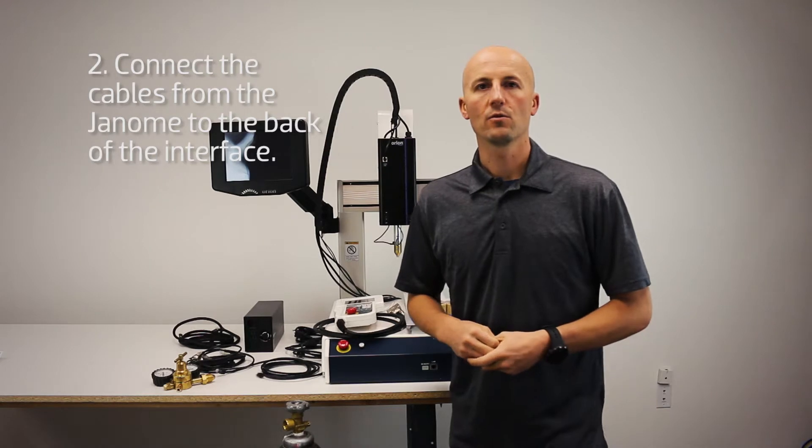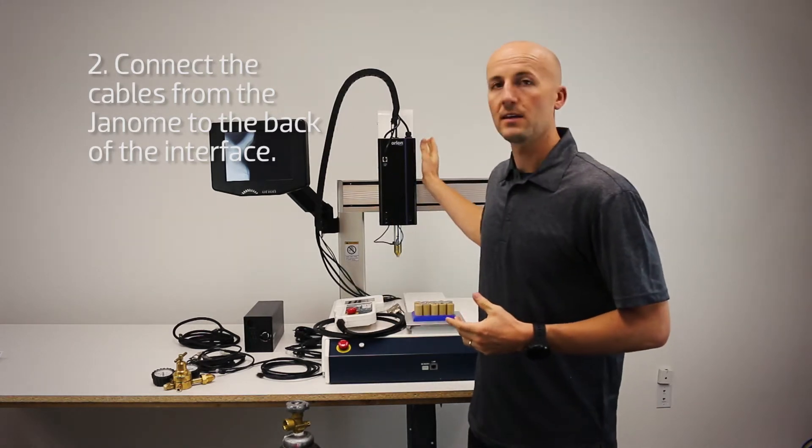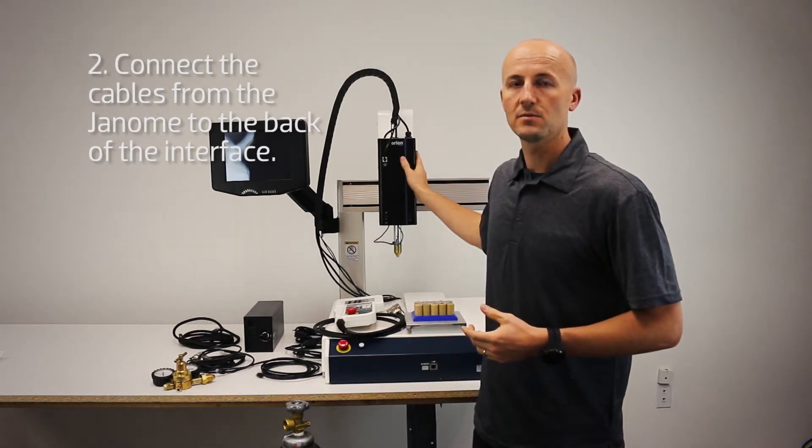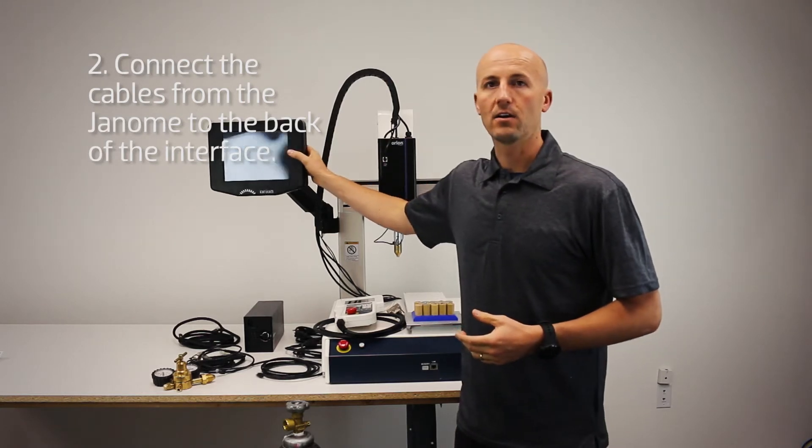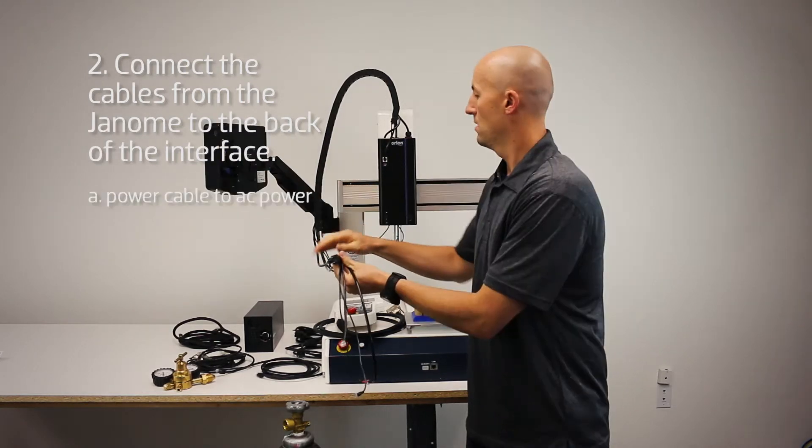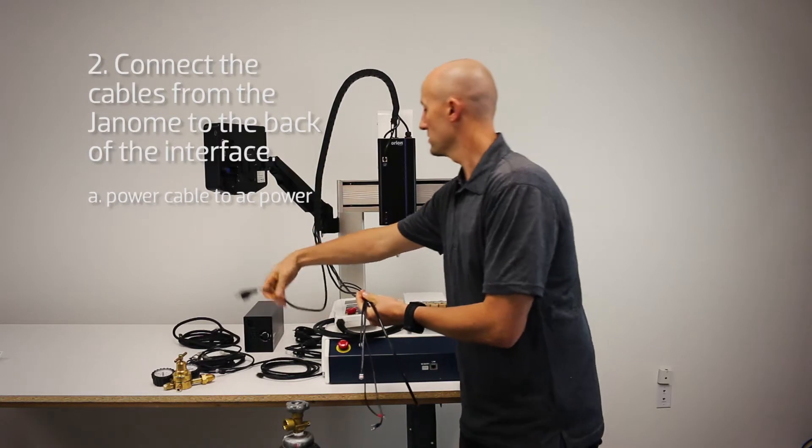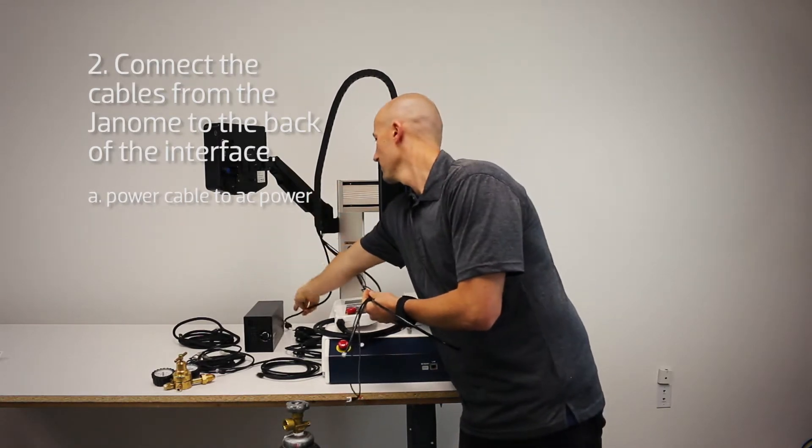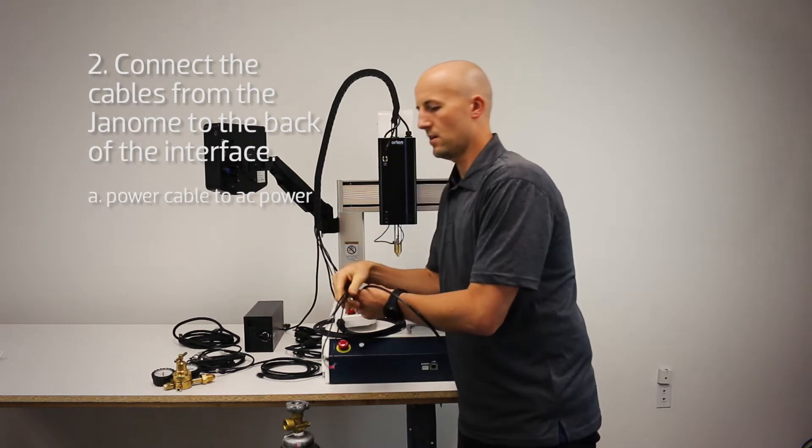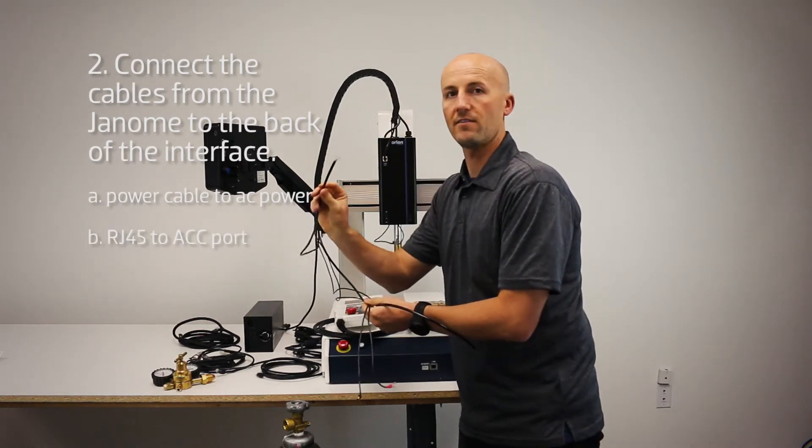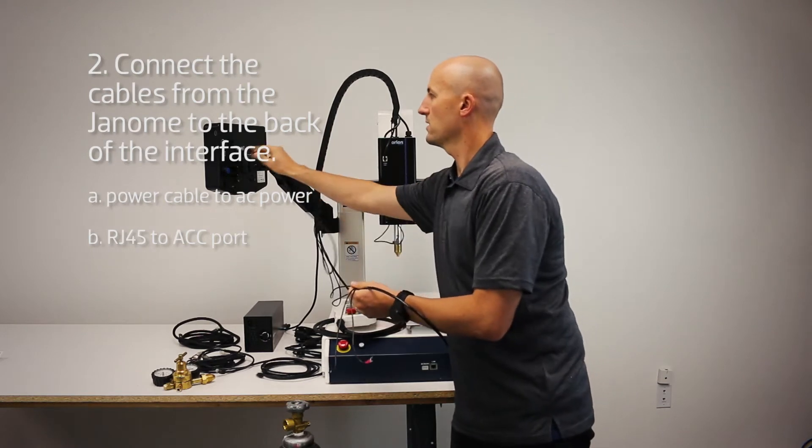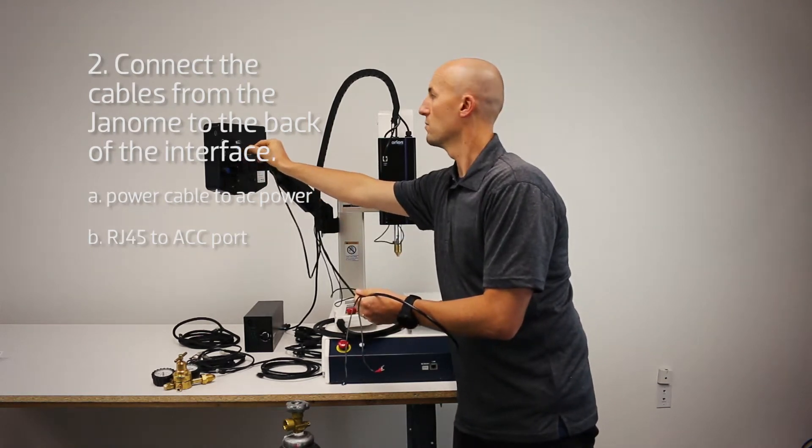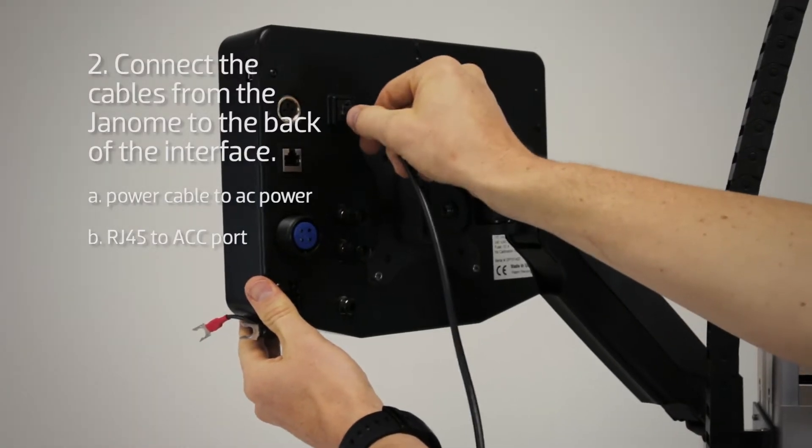Now we're going to connect the cables from the Janome CNC machine to the back of the screen. First, connect this to your AC power. Then you'll have an RJ45 connection that goes on the back to the accessory port labeled ACC.